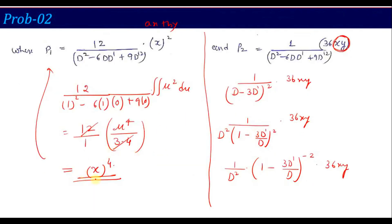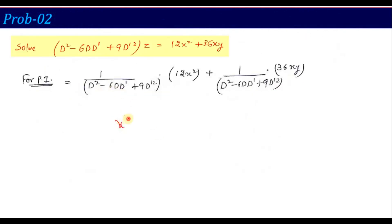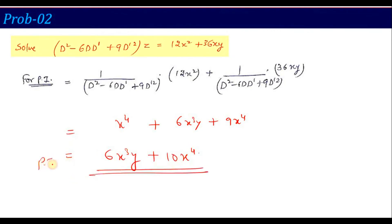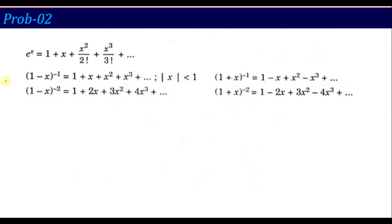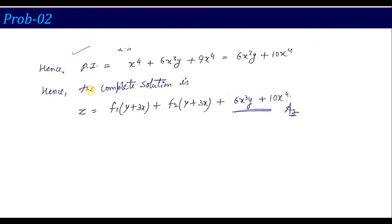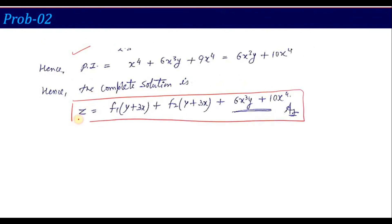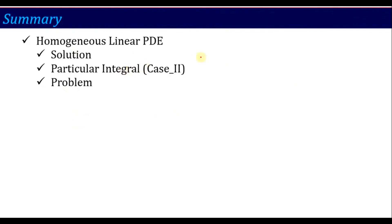After integrating twice and simplifying, P2 contributes terms 6x³y and 9x⁴. Combining P1 and P2, the complete PI is x⁴ + 6x³y + 9x⁴. So the complete solution is z = CF + PI. This completes Case 2 of the PI calculation for homogeneous linear PDEs.